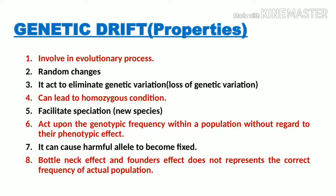Whenever genetic drift occurs, it reduces genetic variation because some members of the small population survive and others get eliminated, reducing the overall genetic differences in the surviving population. The fourth property is that it can lead to a homozygous condition, which we will understand with a diagram. The fifth property is that it facilitates speciation — the formation of a new species — as genetic drift is a factor responsible for the formation of new species.